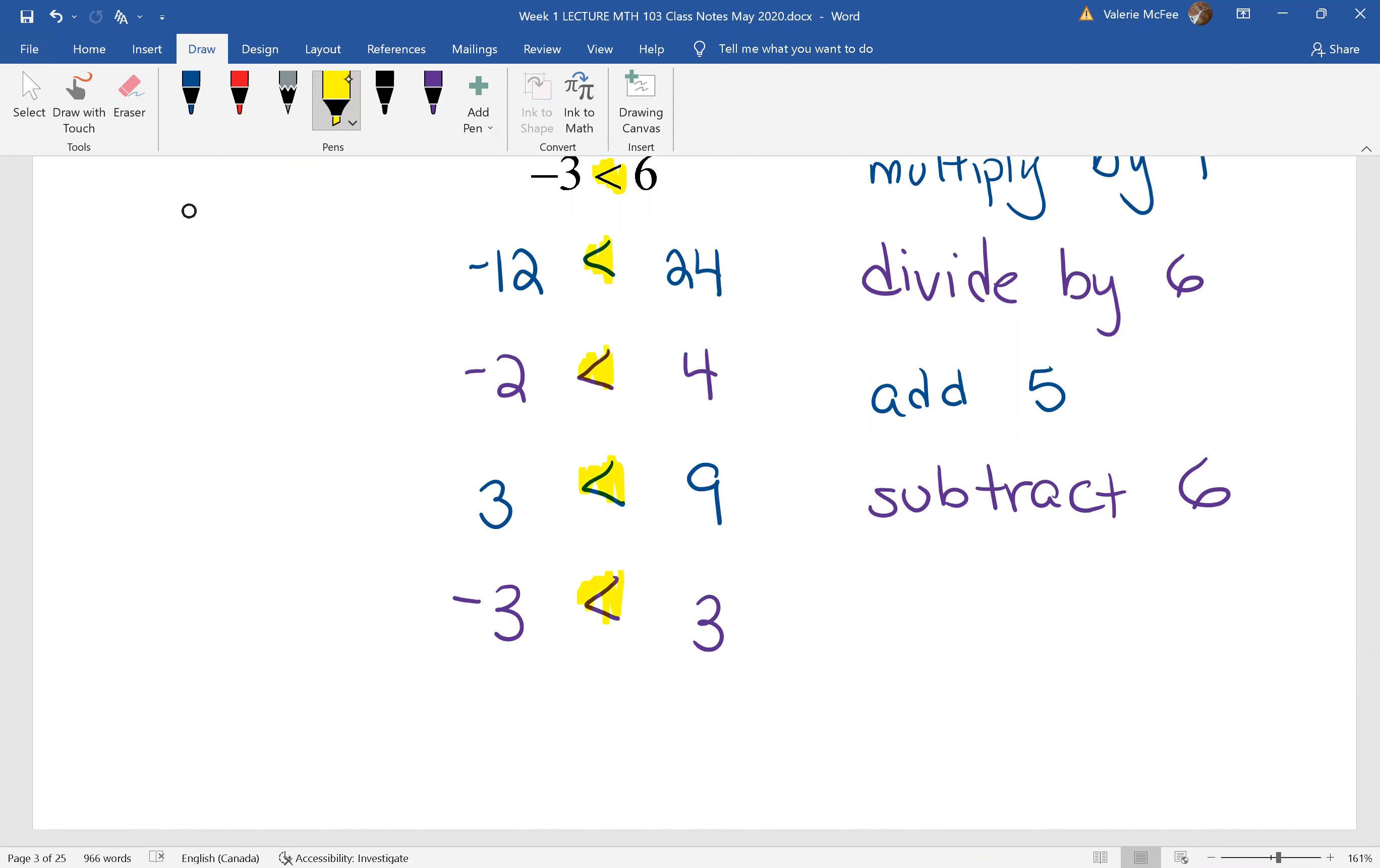But now, let's multiply by negative two. Here I have negative three times negative two, three times negative two.